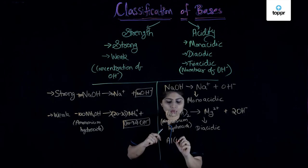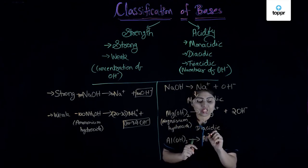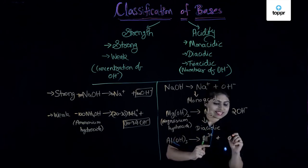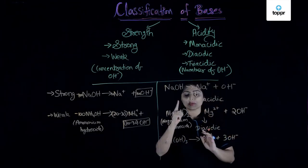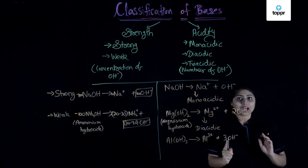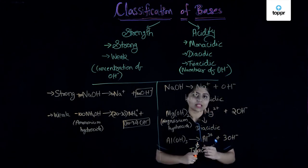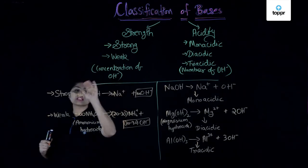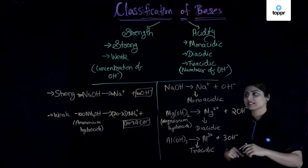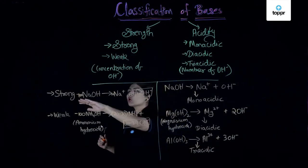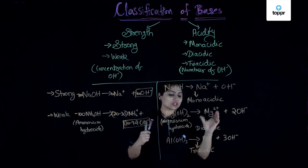Now let's talk about aluminium hydroxide. When Al(OH)3 splits, it gives Al3+, meaning aluminium gives 3 electrons, but OH can accept only one, so we require 3 OH-. One molecule of aluminium hydroxide splits into 3 hydroxyl ions, so this base is called triacidic. To summarize: bases are classified by the concentration of OH- ions as strong or weak, and by the number of OH- ions per molecule as monoacidic, diacidic, or triacidic.